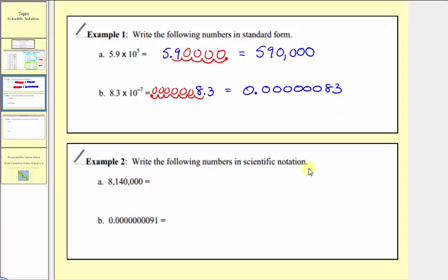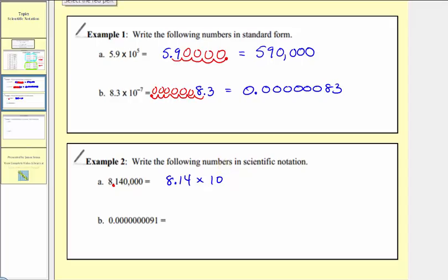In example two, we're asked to do the opposite — write a number given in standard form in scientific notation. The first step is to determine a, where the absolute value of a must be greater than or equal to one and less than 10. To meet this condition, the decimal point would be placed to give us 8.14. So in scientific notation we have 8.14 times 10 raised to some power. Since we started with 8,140,000, a large number, we'll have a positive exponent. We moved the decimal point six places to the left, so the exponent is positive six.